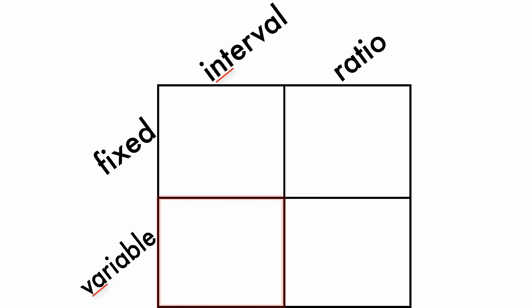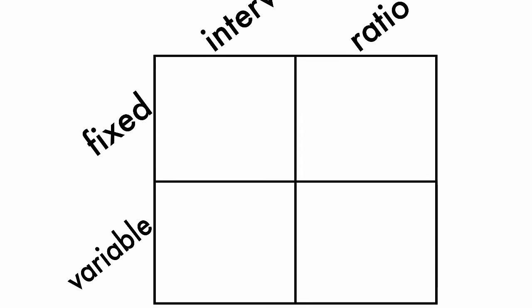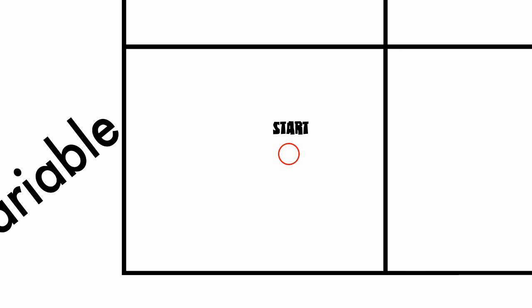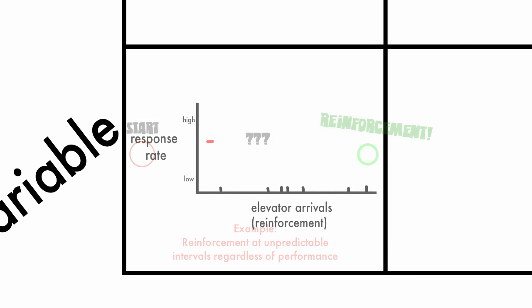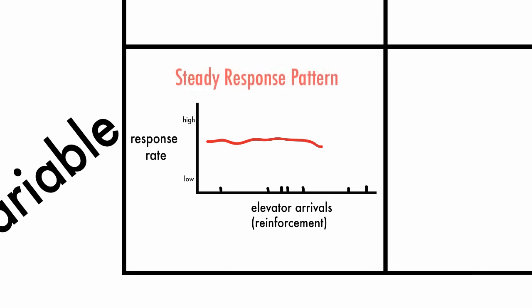Now an example of Variable Interval. Variable Interval would be when someone waits for an elevator. Any time they have to wait an unpredictable amount of time, they are on a Variable Interval schedule. People press the elevator button over and over again when they're in a hurry, but they only need to press the button once. It doesn't matter how many times you press it again. You just have to wait for it to arrive. Variable Interval schedules produce steady rates of responding.